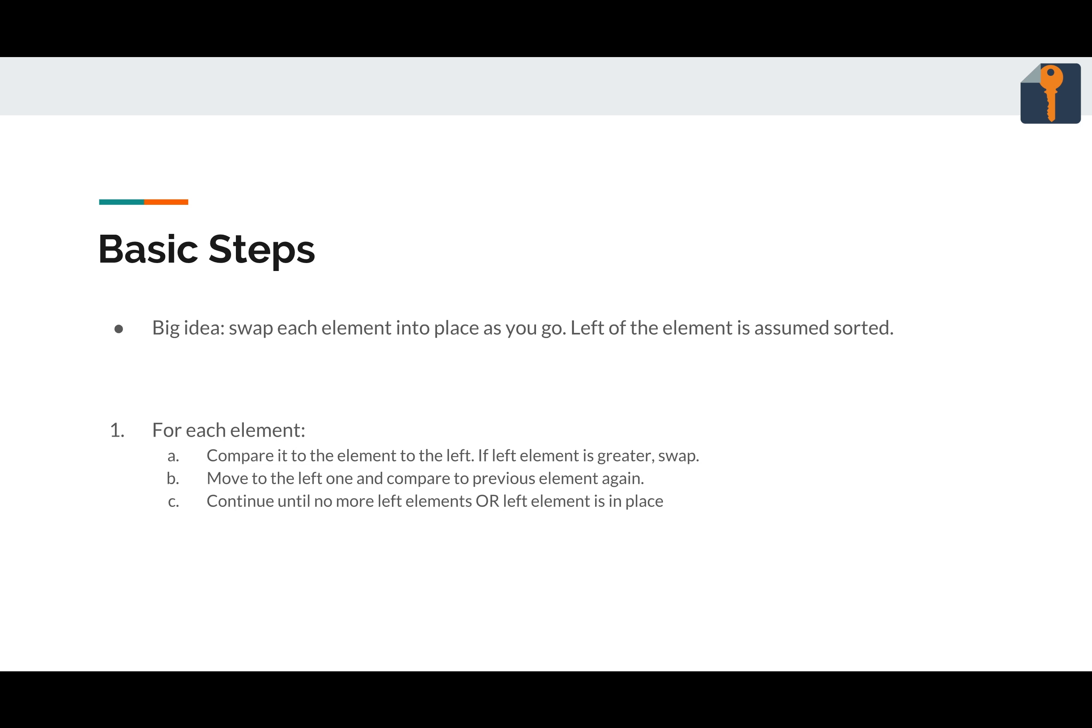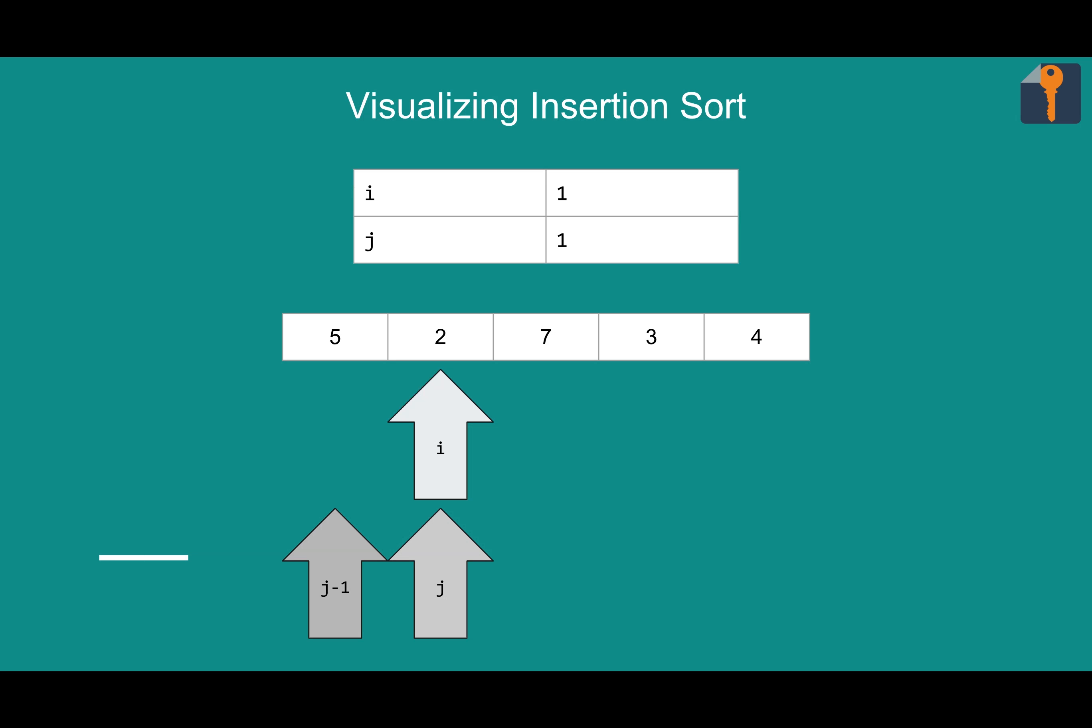So how does that work step by step? For each element, we compare it to the element to the left. And if the left element is greater, we swap it out, moving it into the sorted part of the array. And then we're going to move to the left one and compare it yet again. And we'll continue until there are no more elements to the left, meaning that it was the smallest so far in that sorted partition. Or if the left element is less in the sorted half, then we're done. So that might seem a little confusing, but we'll jump into the visualization, which will show us exactly what that means.